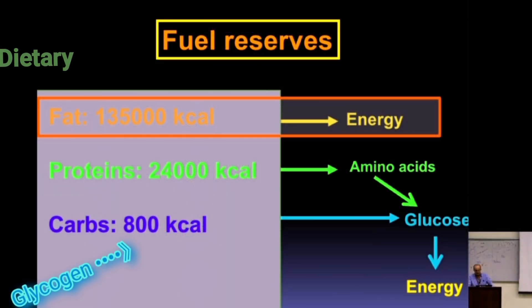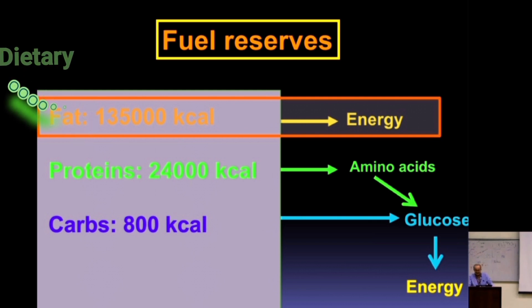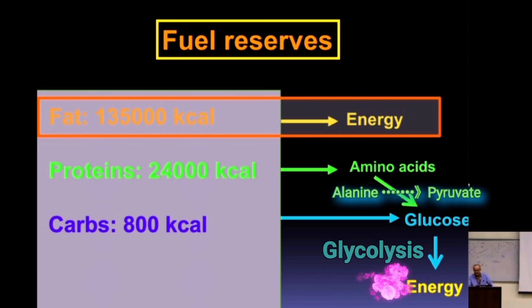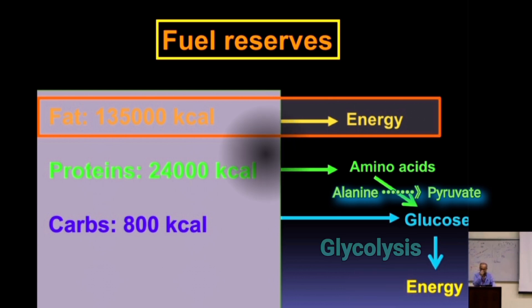Most proteins are degraded to amino acids. For example, alanine can be converted to pyruvate, and pyruvate can be converted to glucose — so most amino acids can also be converted to glucose to provide energy through glycolysis. Let's take the example of alanine produced from the digestion of dietary protein.